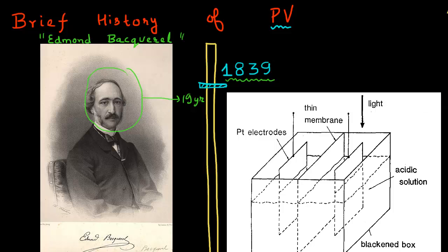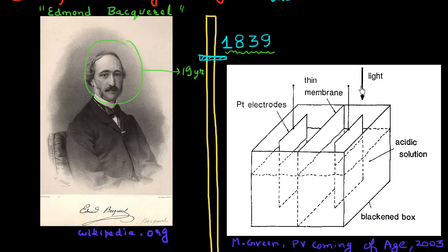So the experiment that he performed, I'm showing it over here. So he in fact observed this for electrolytes. And he had this equipment where he was essentially measuring this voltage across these two electrodes. And he was shining light on one of these electrodes. And he measured a potential difference when you shine light on one of these electrodes. So this was the first discovery of photovoltaic effect.